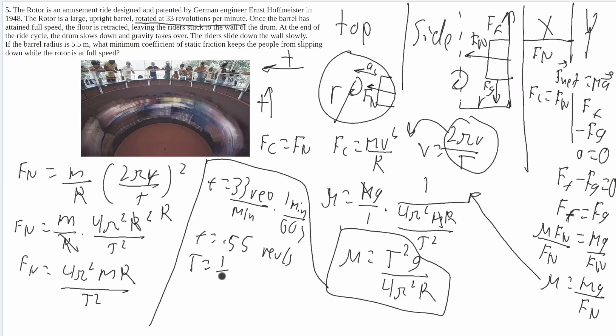And period is equal to 1 over frequency. So it'll be 1 over 0.55 revolutions per second. And we'll get a period is equal to 1.82 seconds per revolution.